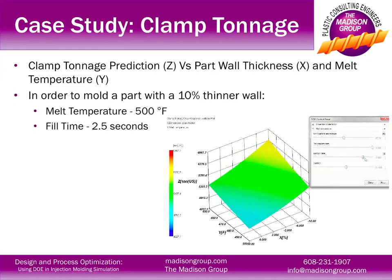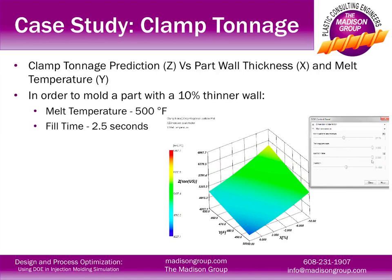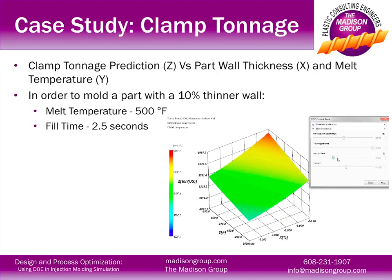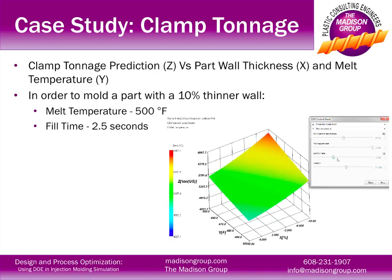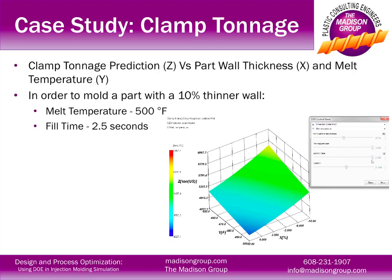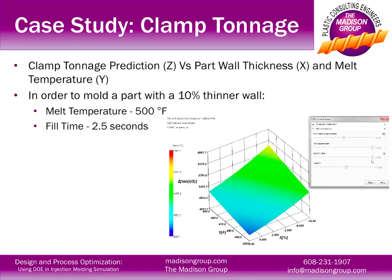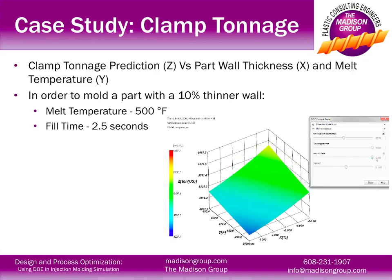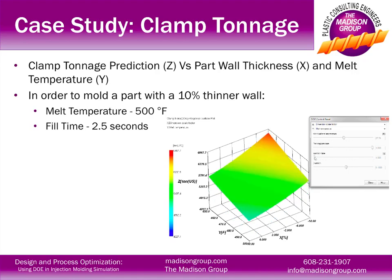In addition to injection pressure, we can look at clamp tonnage versus wall thickness and melt temperature. The tonnage capacity we're trying to stay within is 6,000 tons, and we can see that the process can quickly get out of control and exceed the 6,000 ton limit. However, if we want to make the part at the reduced wall thickness — the 90 thousandths wall thickness — we can inject at a long fill time and high melt temperatures, which should provide a broad enough processing window to be comfortable molding the thinner part. The surface plots clearly allow for quick and easy interpretation of the DOE results.